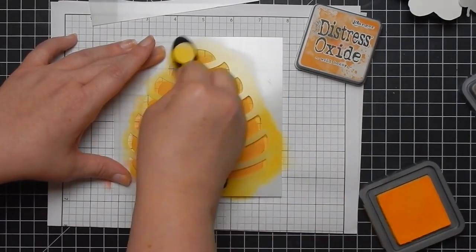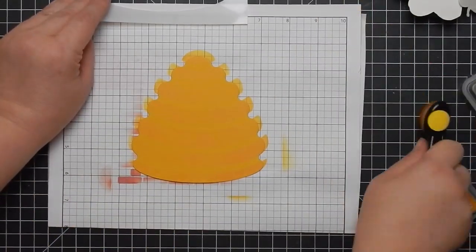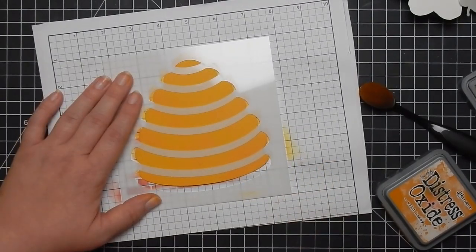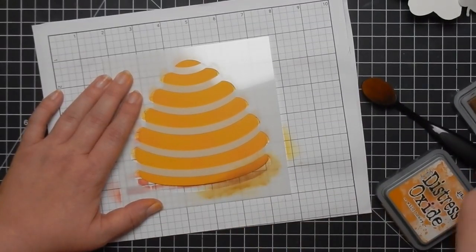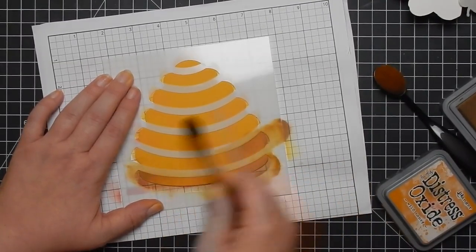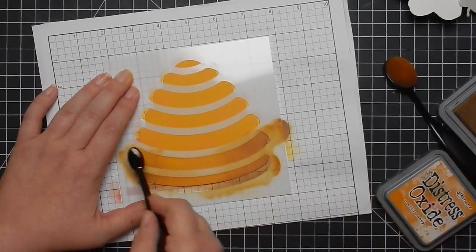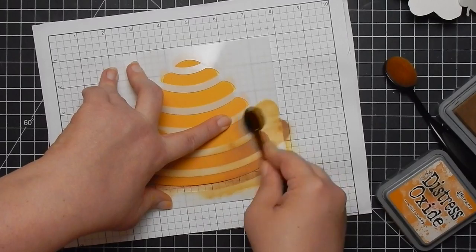So I'm adding the Wild Honey to the cardstock using my blender brush. It shows up better in person - it's a little light, lighter than I wanted, to be honest. I'm bringing in the Gathered Twigs and I'm really darkening it up, especially the edges, to kind of give it some dimension. I don't know if I used the stencils properly.